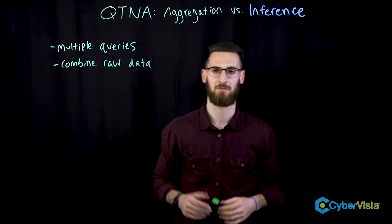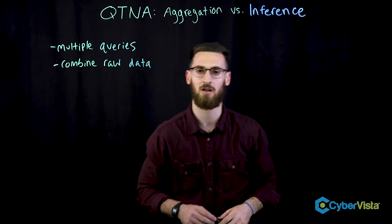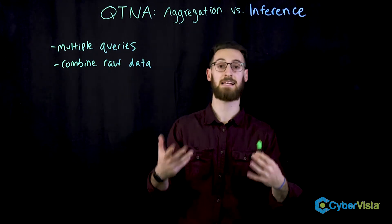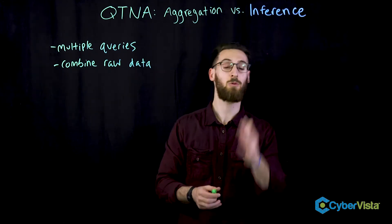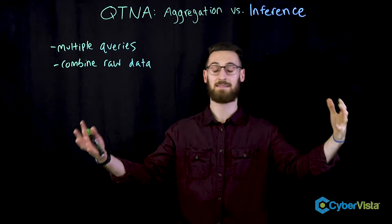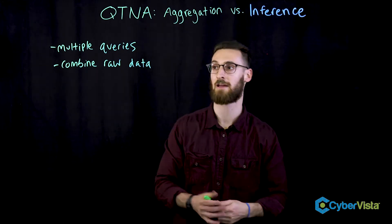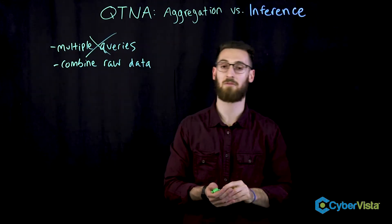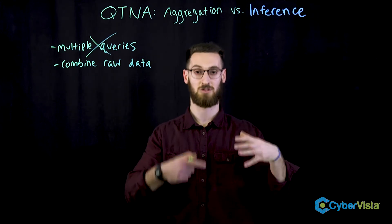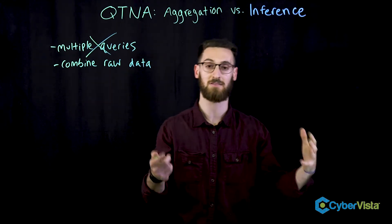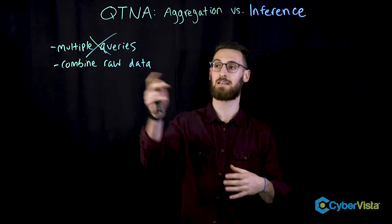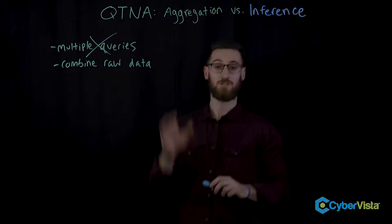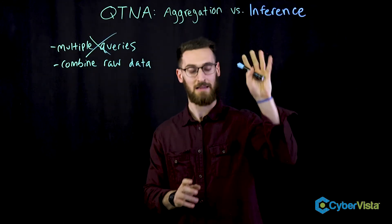So how are we actually going to stop aggregation? Well, this should be treated as a sensitive function. We want to limit how many databases certain people can query. So if we actually block some of these aggregate search functions on databases, we can limit and reduce the risk of aggregation.